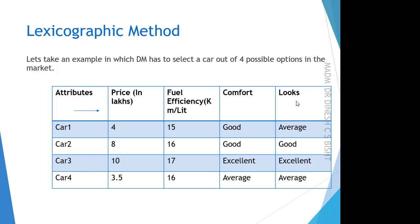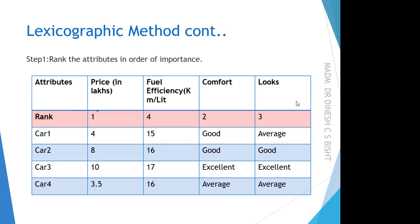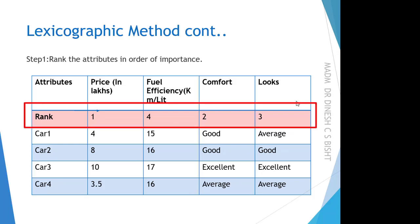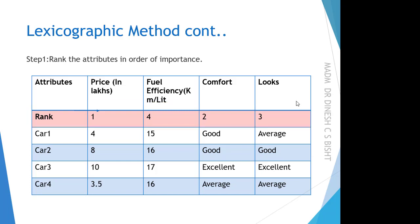One more thing: comfort and looks are given in terms of linguistic terms like good, excellent, and average. Step 1 — the first step is to rank the attributes in order of importance. In this case, the decision maker has decided price as the most important attribute, then comfort, then looks, and the last preferred attribute is fuel efficiency.